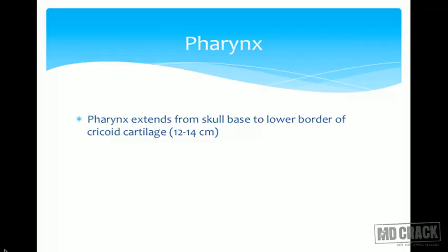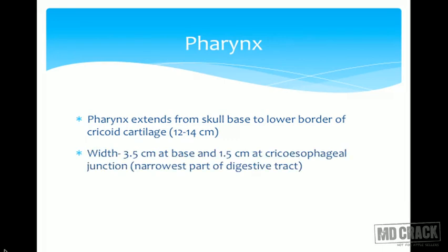Moving on to the pharynx: it extends from the skull base to the lower border of the cricoid cartilage. It is around 12 to 14 centimeters in length, 3.5 centimeters wide at the base, and 1.5 centimeters at the cricopharyngeal junction. The cricopharyngeal junction is the narrowest part of the digestive tract.